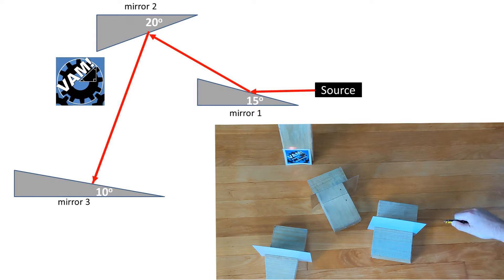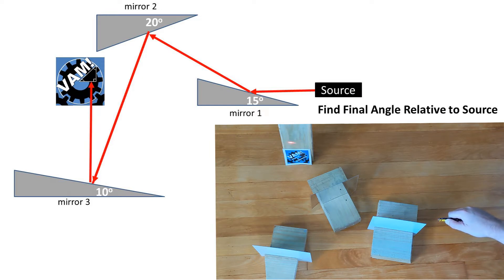This bounces off a second mirror that is at a 20 degree angle, and finally, this bounces off of a third mirror that has a 10 degree angle. What angle does the laser pointer bounce off the last mirror relative to the source?